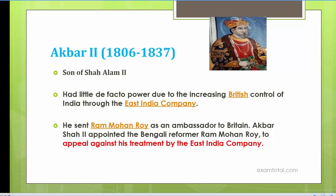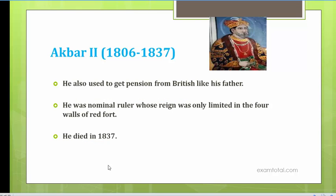Because of his treatment as a pensioner, Akbar II appointed Ram Mohan Roy — the Bengali reformer — to appeal against his treatment, and sent him as an ambassador to Britain. An important question is: who gave the title of Raja to Ram Mohan Roy? The title was conferred by Akbar II. He was a mere pensioner of British rule, a nominal ruler whose power only spread within the four walls of Red Fort in Delhi. He died in 1837.